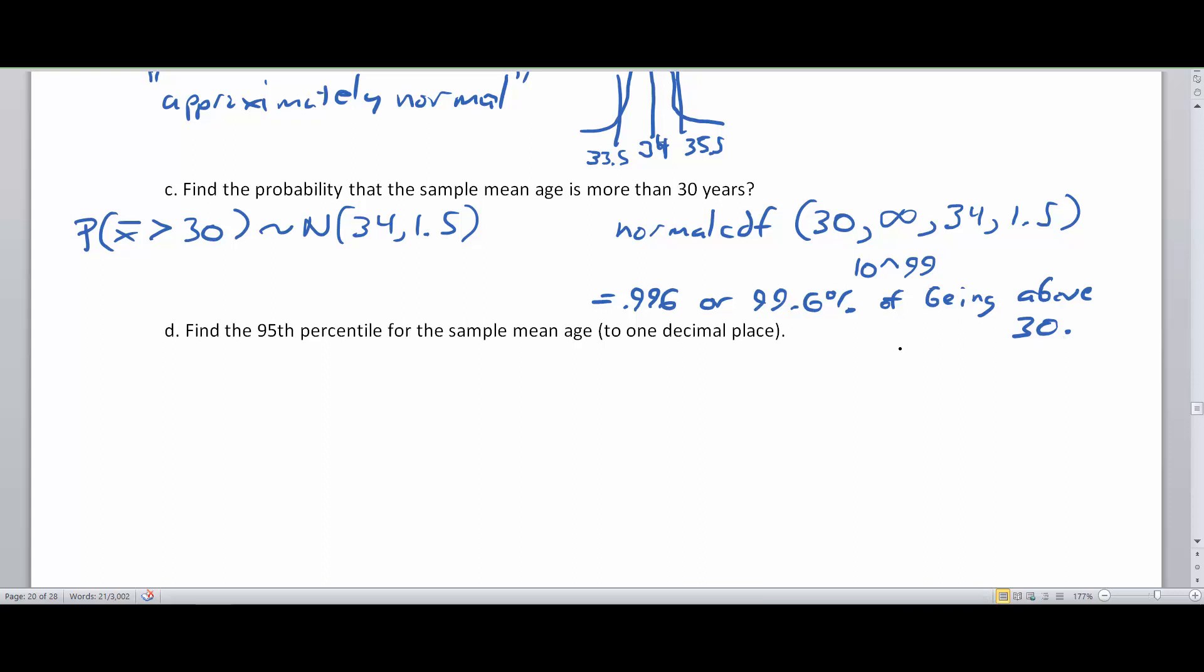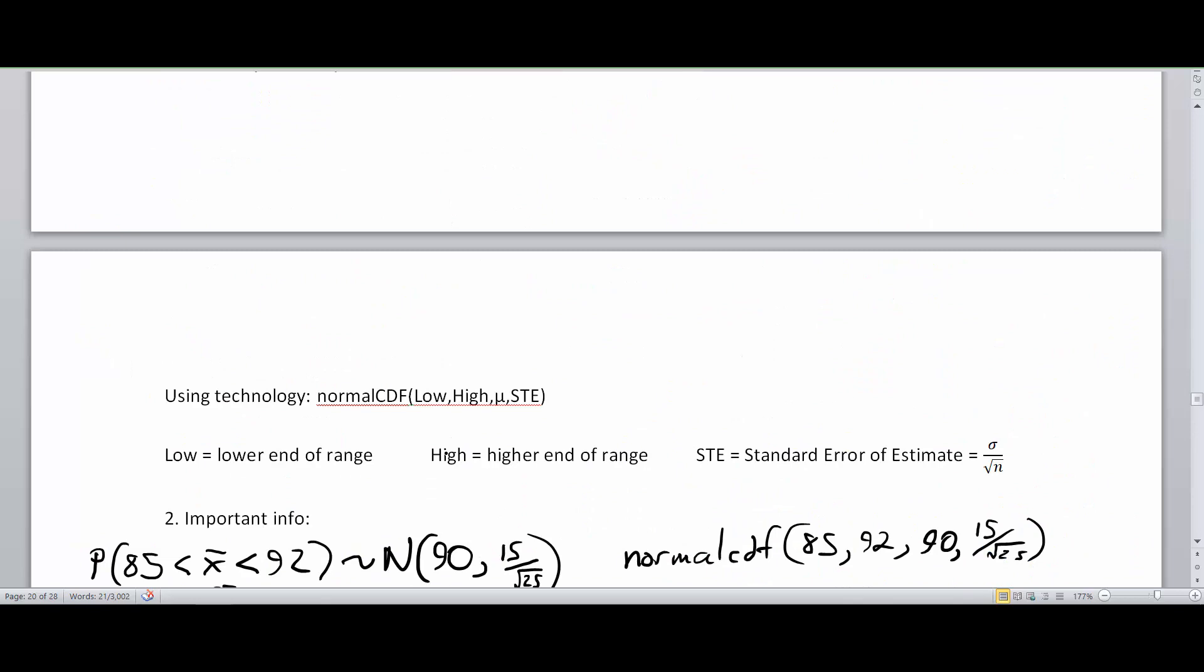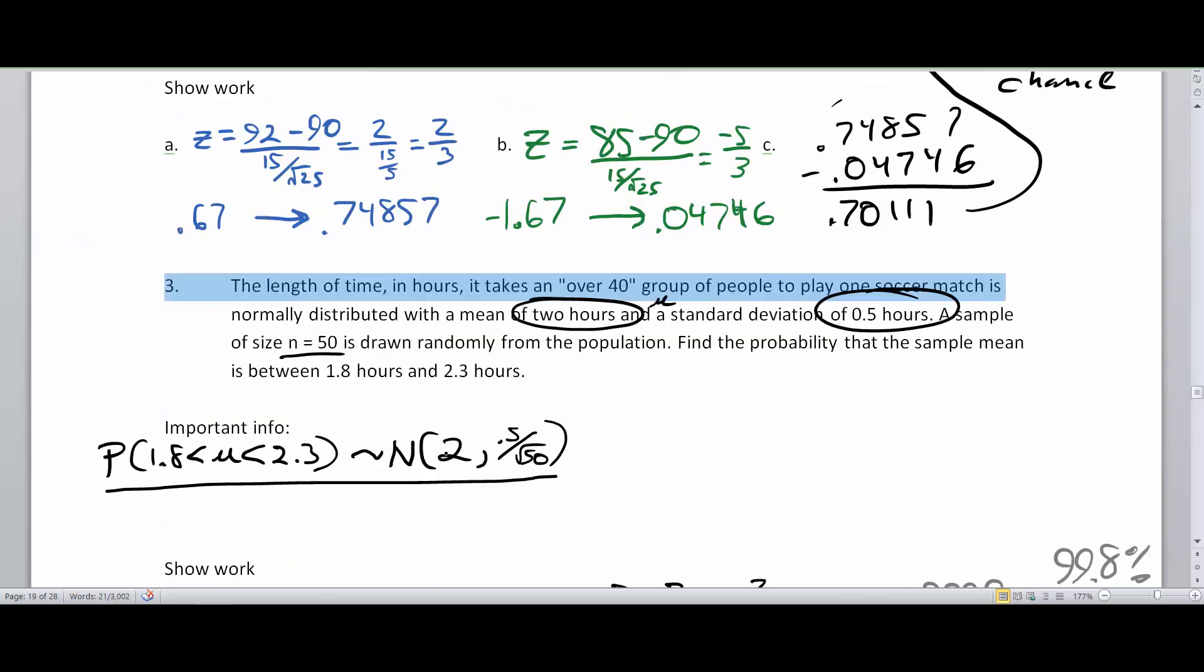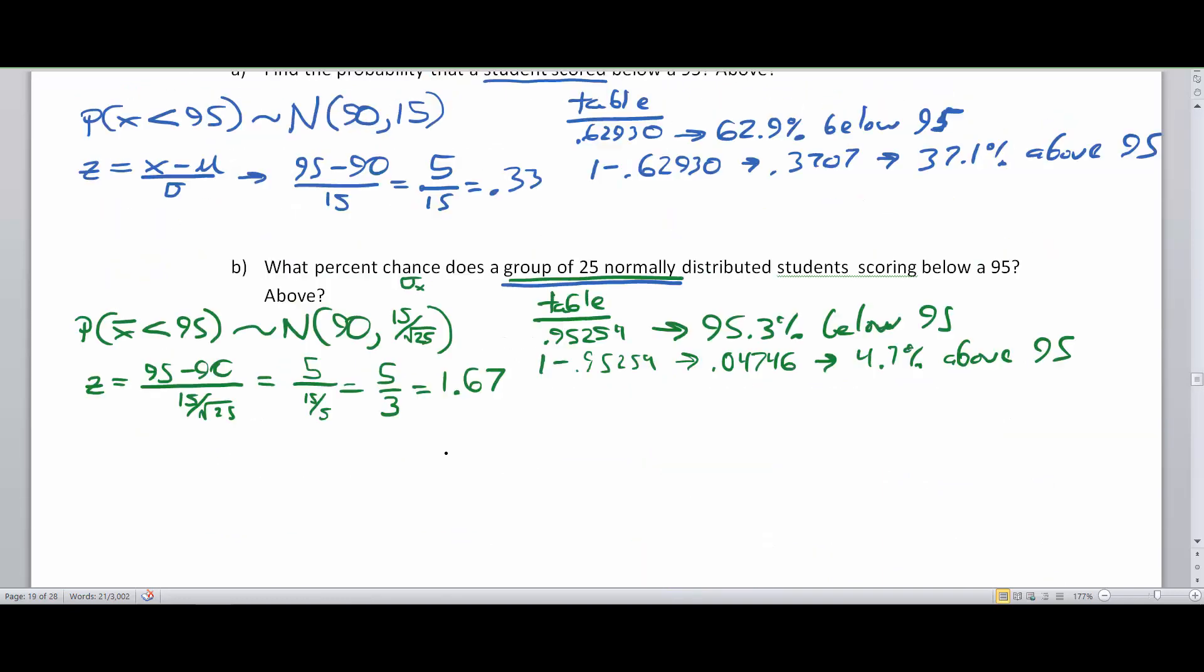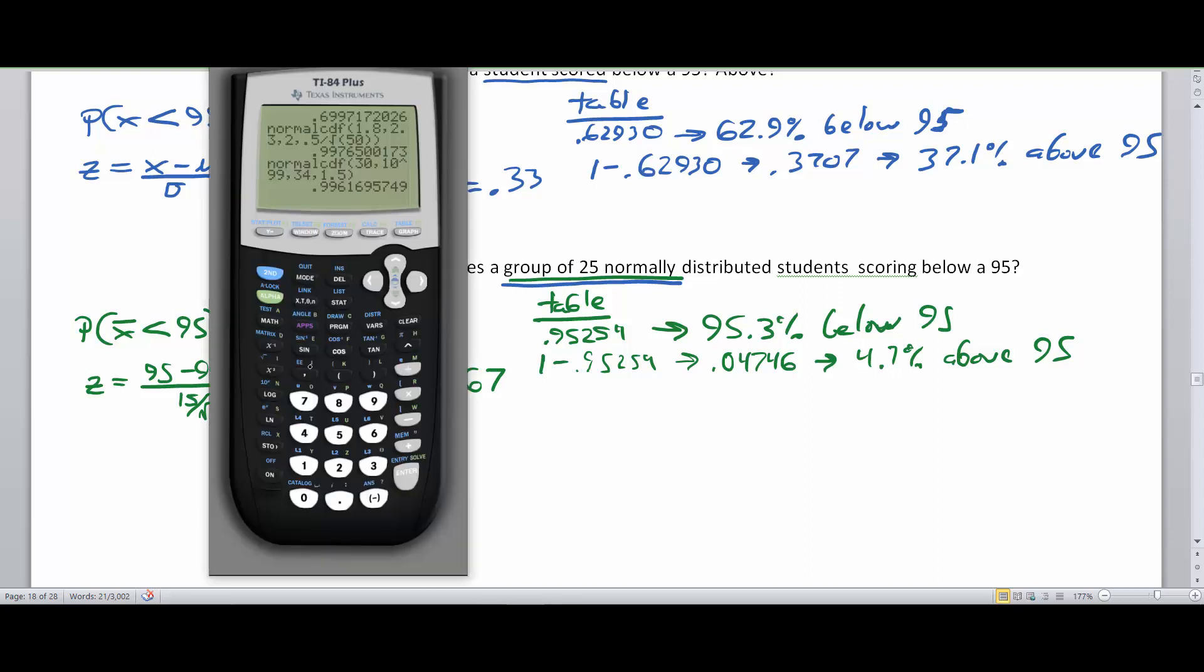So if the average is 34 and you want to say, what are the chances of it being greater than 30? Yeah, 99.6% chance of that's a thing. Now, of course, that's back in 2012. I'm sure that's different now. Now you might be thinking, but Mr. Anderson, if this formula works for not only above and below and between, could we have done it on the first page of this handout? Well, sure we could have. Let's go back to this problem here. Let's go back to problem one part B. What percent chance is a group of 25 normally distributed students scoring below a 95?